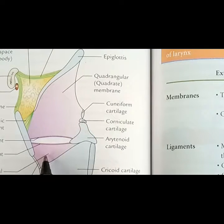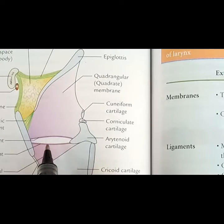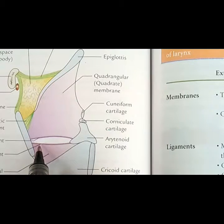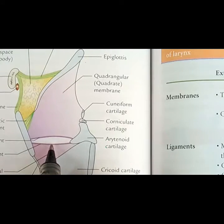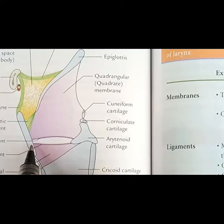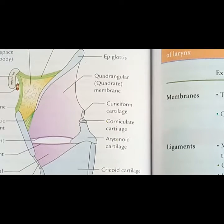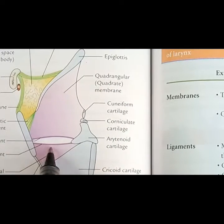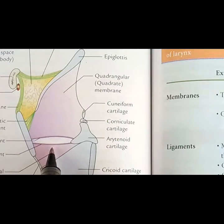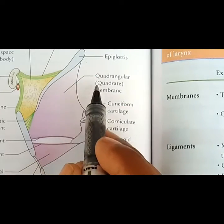The cricovocal membrane has an upper free edge which is thickened to form the vocal ligament. The vocal ligament is yellow elastic tissue which extends from the posterior surface of the thyroid cartilage to the vocal process of the arytenoid cartilage. This vocal ligament is covered by mucous membrane to form the vocal fold.